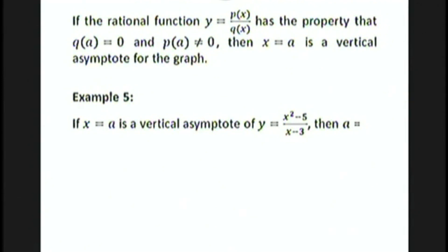To find vertical asymptotes of a rational function, we use a simple theorem: if the rational function y equals p of x over q of x has the property that q of a equals zero and p of a is not zero, then x equals a is a vertical asymptote for the graph. In other words, if we plug in a value that makes the denominator zero but doesn't make the numerator zero, then we have a vertical asymptote there.